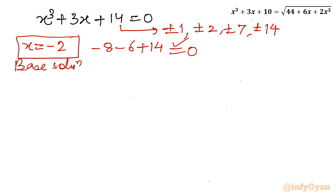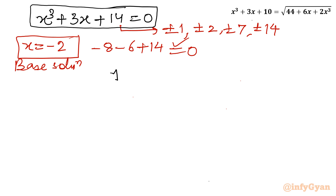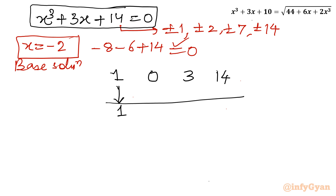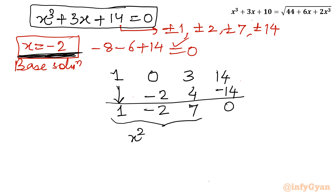Now I will use the synthetic division method. Coefficients of the cubic equation are: 1 (x³), 0 (x²), 3 (x), 14 (constant). Base solution is −2. Working through SDM: −2 × 1 = −2; −2 + 0 = −2; −2 × −2 = 4; 4 + 3 = 7; −2 × 7 = −14; −14 + 14 = 0. These are the coefficients for the quadratic factor: x² − 2x + 7 = 0.